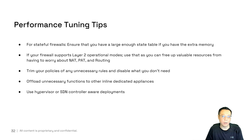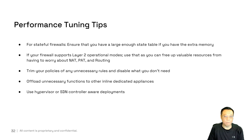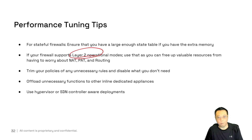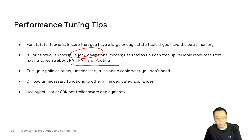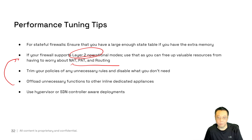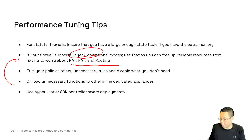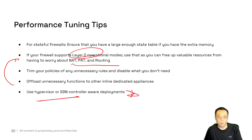Here are some performance tuning tips for any firewall and firewall rule base. For stateful firewalls, make sure you have a large enough state table and sufficient memory to process more connections at any one point. If you have a firewall operating at Layer 2, free it up from having to do NAT and routing when you don't need to — let the network engineering team use routing devices for that. Trim policies by removing unnecessary rules and disabling what you don't need during testing so rules don't get loaded into memory. A firewall should be a firewall — should it really NAT or PAT if you don't need it to? Also consider whether your firewalls are virtualization and SDN aware, and whether they can reconfigure themselves based on infrastructure as code concepts.